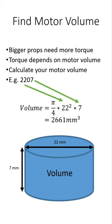Okay, so bigger props need more torque because they have more drag and more mass to spin up and spin down. Torque depends on your motor volume.